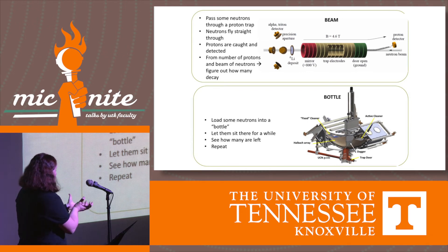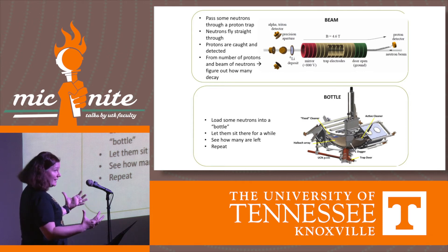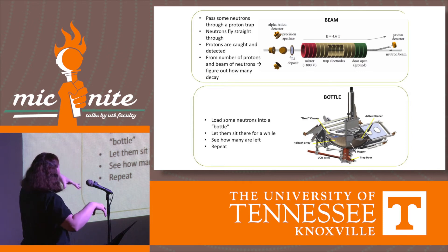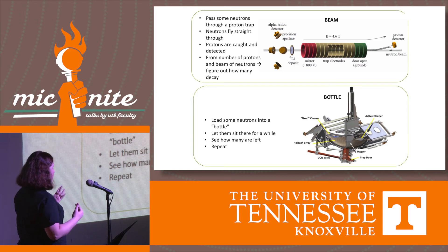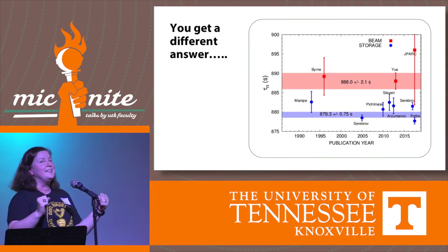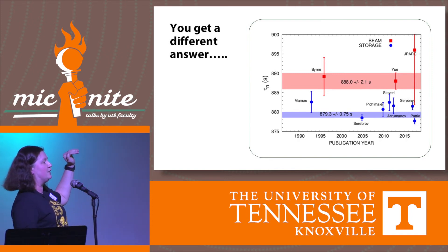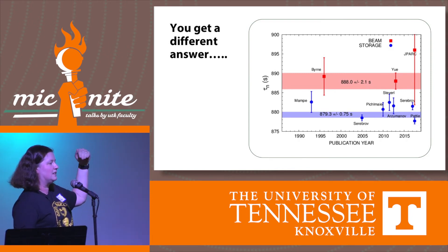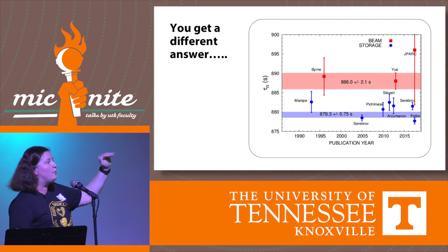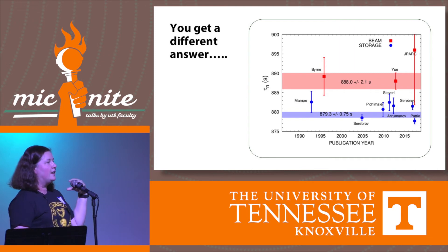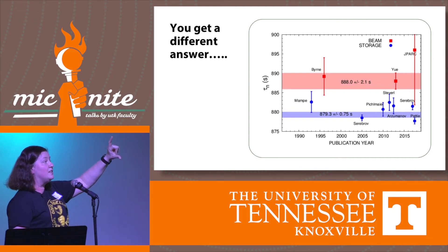The bottle option is a different approach. One experiment running at Los Alamos National Lab uses a bowl made of 10,000 permanent magnets. Neutrons are placed inside and they float in the magnetic bottle. You wait, count how many are left, keep filling the bottle, and repeat. The problem is that the beam experiments and the bottle experiments don't get the same answer. Plotting results by publication year, the bottle results consistently give a higher lifetime than the beam results.